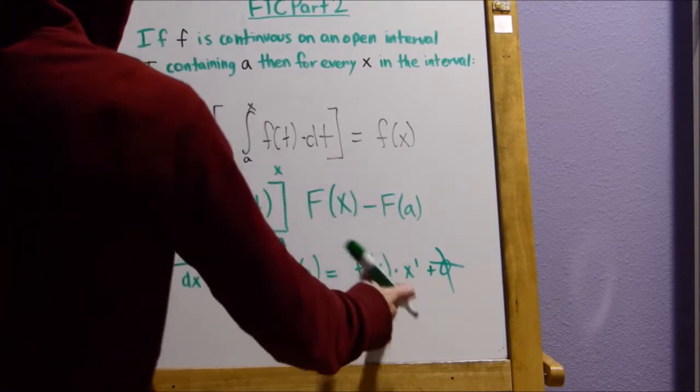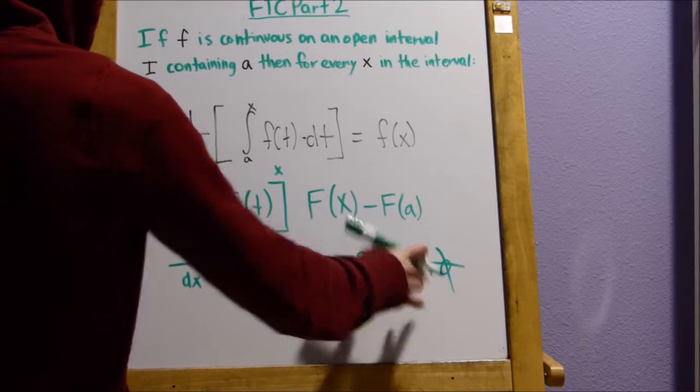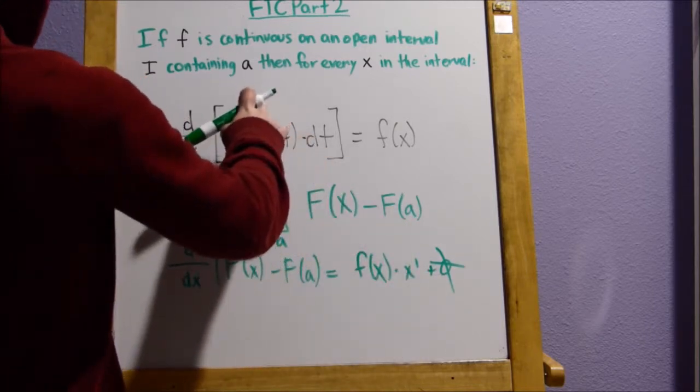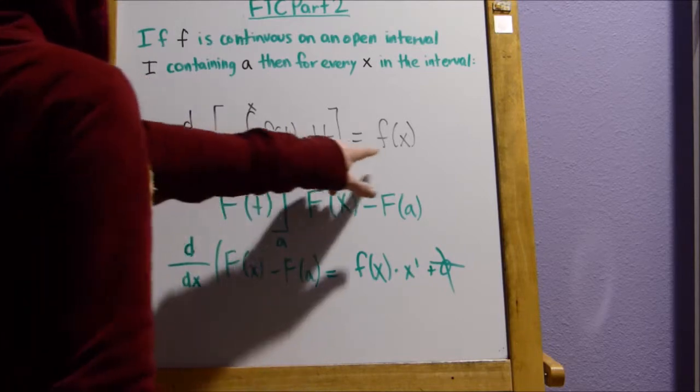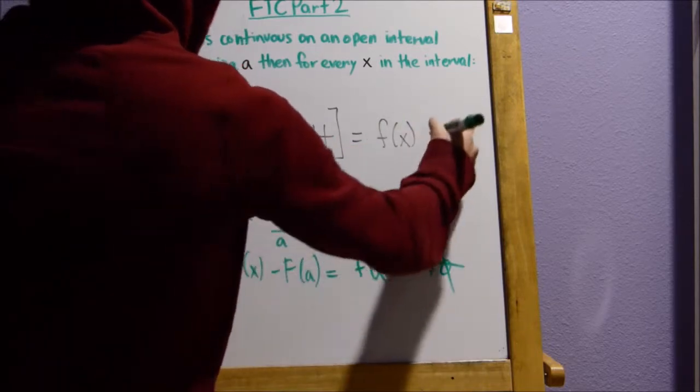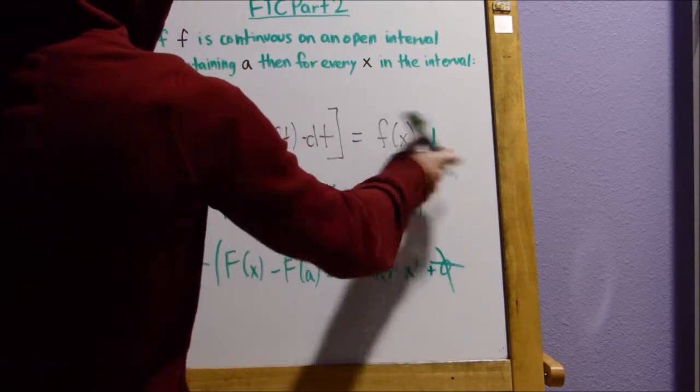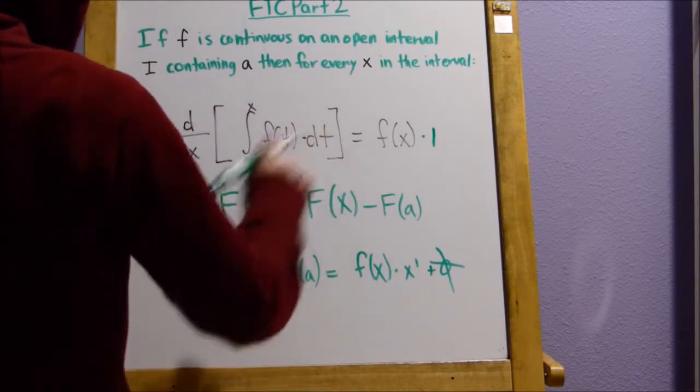Now, notice here we say times x prime. Here, if you were to substitute t or x for t and you multiply it by x prime, it would be times one. So that's basically the same thing.